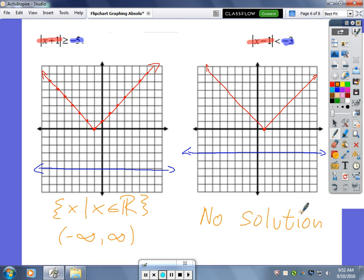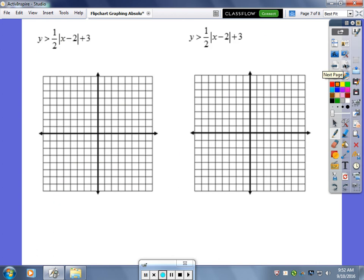Now let's move on to absolute value inequalities in two variables. y is greater than 1/2 the absolute value of x minus 2 plus 3. Our vertex is at positive 2 and 3. Our dilation is 1/2, in other words we go 1 up, 2 to the right, 1 up, 2 to the right, and the same 1 up, 2 to the left. Now before you draw your line, remember that we are talking about an inequality with the inequality symbol greater than.